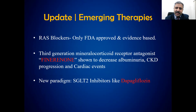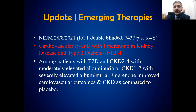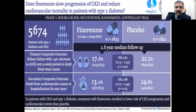In emerging therapies, two will be discussed. First, mineralocorticoid receptor antagonist — finerenone, similar to spironolactone — has shown to decrease progression of diabetic nephropathy. A study published in the New England Journal showed that in type 2 diabetics with kidney disease, finerenone decreases the progression of diabetic nephropathy and can be used even in advanced disease. The main risk is hyperkalemia, especially when combined with ACE inhibitor or ARB, so potassium levels must be monitored.